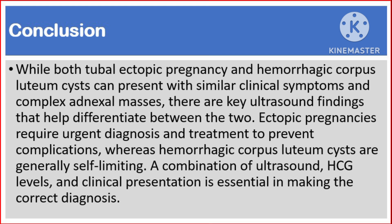Conclusion. While both tubal ectopic pregnancy and hemorrhagic corpus luteum cysts can present with similar clinical symptoms and complex adnexal masses, there are key ultrasound findings that help differentiate between the two. Ectopic pregnancies require urgent diagnosis and treatment to prevent complications, whereas hemorrhagic corpus luteum cysts are generally self-limiting. A combination of ultrasound, HCG levels, and clinical presentation is essential in making the correct diagnosis. Thank you for watching.